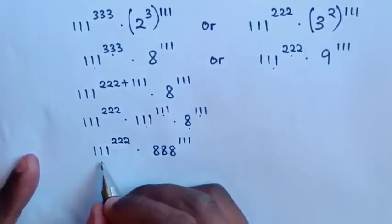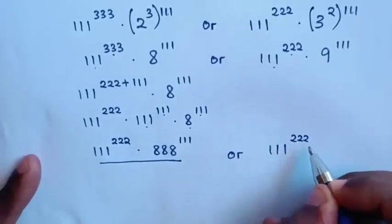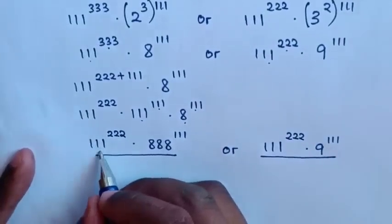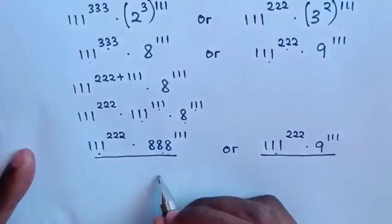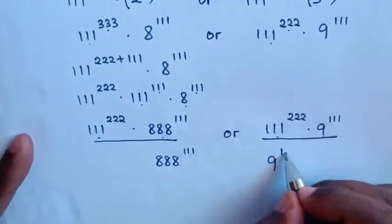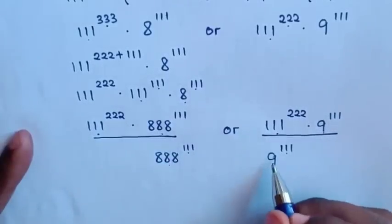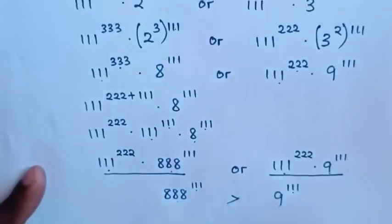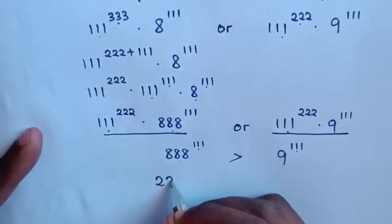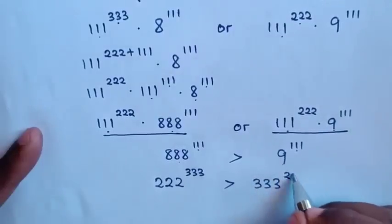Then, we compare between this side and this side, which is 111 power of 222 times 9 power of 111. Because we have a common factor of 111 power of 222 on both sides, we compare 888 power of 111 versus 9 power of 111. Because we have the same power but different bases, 888 is greater than 9. Therefore, our final answer is 222 power of 333 is greater than 333 power of 222.